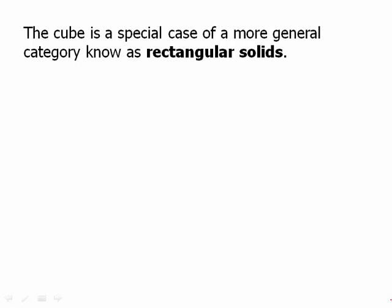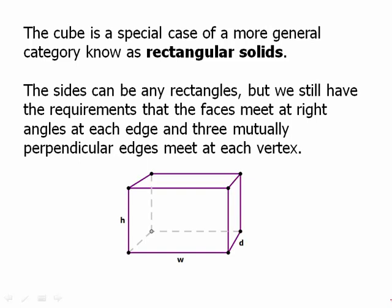The cube is a special case of a more general category known as rectangular solids. The sides can be any rectangles, but we still have to have the requirement that the faces meet at right angles at each edge, and three mutually perpendicular edges meet at each vertex. Notice that the opposite rectangles are congruent in a rectangular solid.